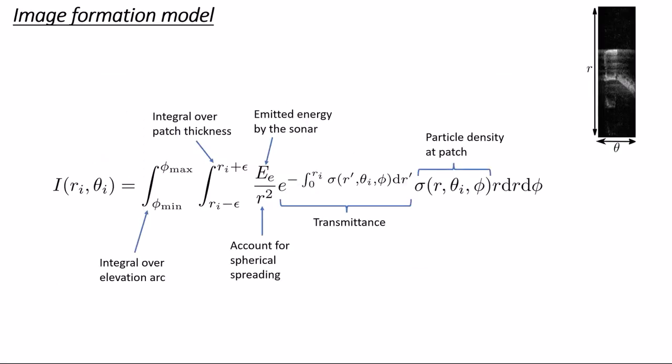We first introduce the following rendering loss, which models the process of pixel formation in a sonar image. We discretize this formation model and use it to train our neural network to learn an implicit surface directly from the sonar images.